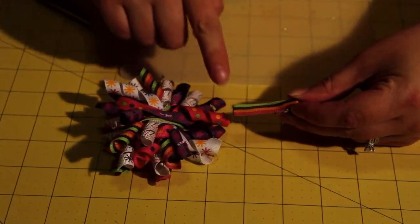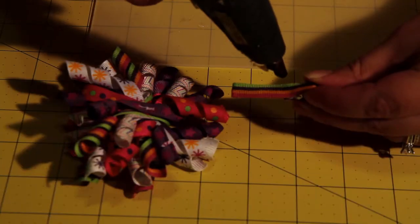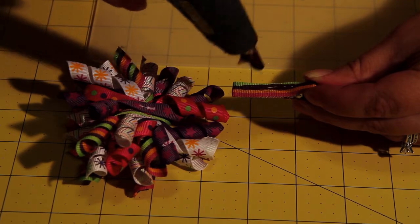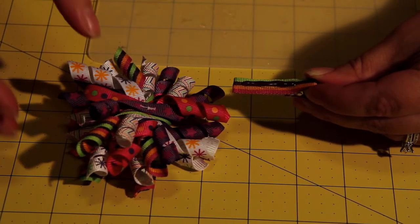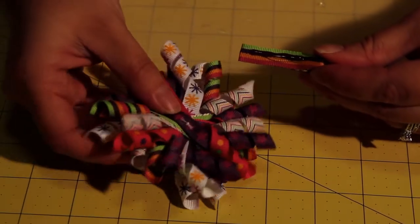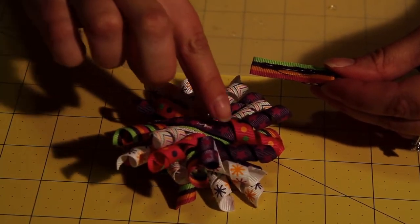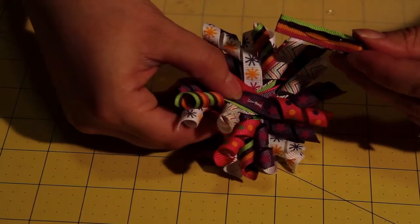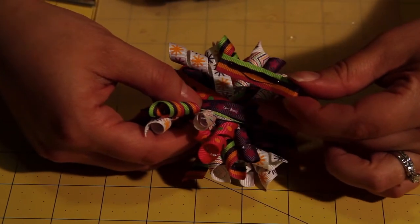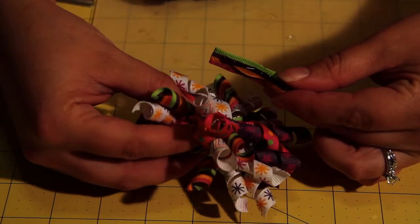What I am going to do is I am going to put some glue right here. Again, you do not want to use too much. But you want to make sure that there is enough to hold the bow on. Now what I am going to do is I am going to take this piece of ribbon right here. And that is what I am going to, this is the part that I am going to attach to the alligator clip.